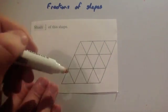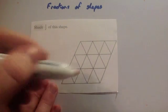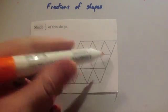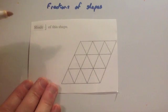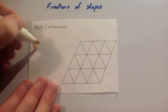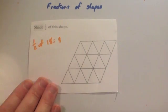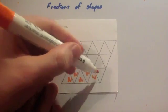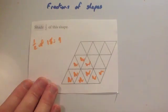Or you could do it the other way, which is to count up all the little triangles altogether. There are 18 little triangles in total. Then you want to shade in a half, so you do a half of 18, which is nine. So you shade in nine of them — that would be a half of it.